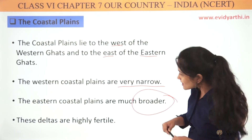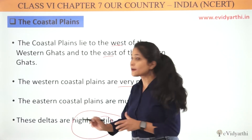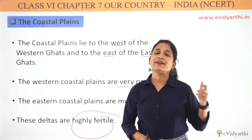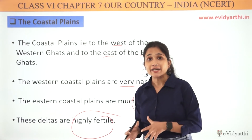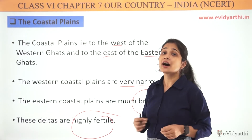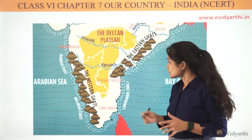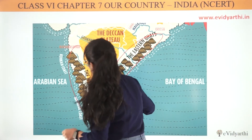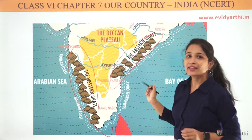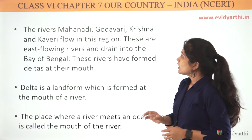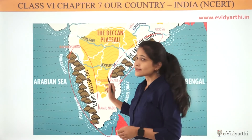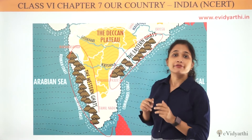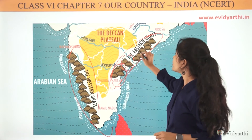And the reason is that these deltas are very fertile in coasts. The Western Ghats is a very continuous range, whereas the Eastern Ghats is a discontinuous range.